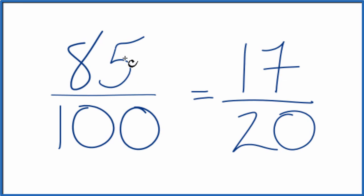We've simplified the fraction 85 over 100 down to 17 over 20. We can't reduce this any further. It's in lowest form.